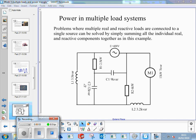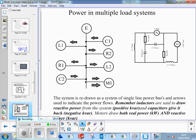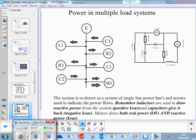The way we go about doing that is to draw a slightly different diagram of the same system. The system is redrawn as a system of single line power buses. We can just draw single lines to represent a three-phase conductor because we're not interested in visual flows. Then we put arrows on there to indicate the power flow.